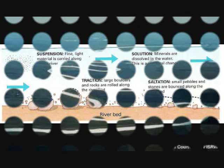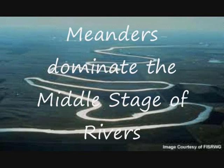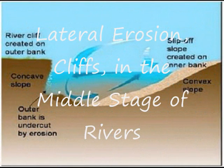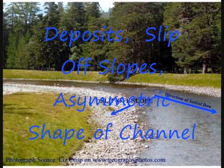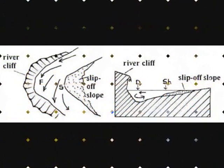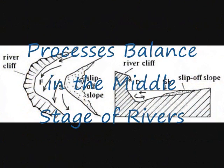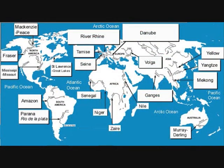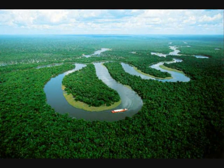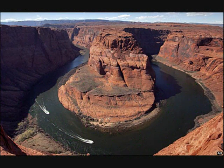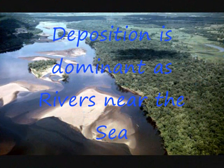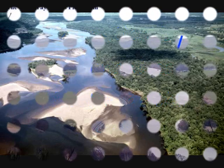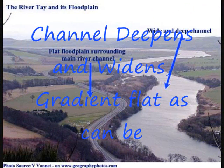Meanders dominate the middle stage of rivers, shaped by erosion from banks and bed. Lateral erosion creates cliffs in the middle stage. Deposition forms slip-off slopes, the asymmetric shape of the channel. Processes balance in the middle stage as the channel widens.